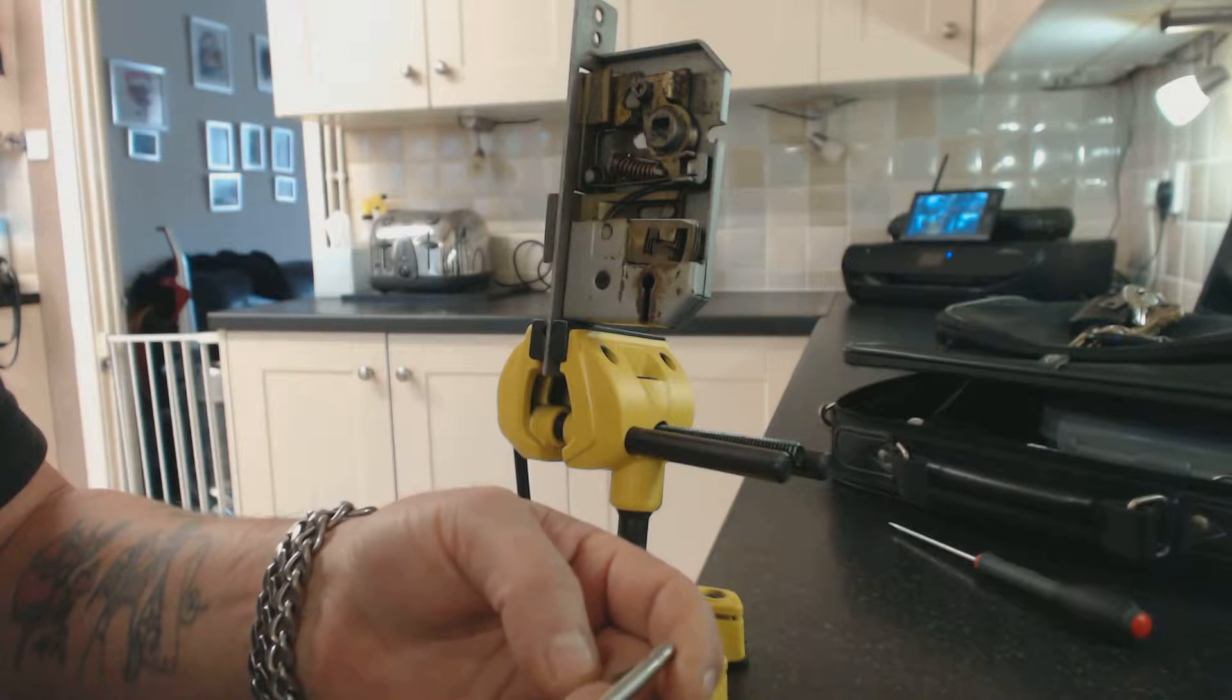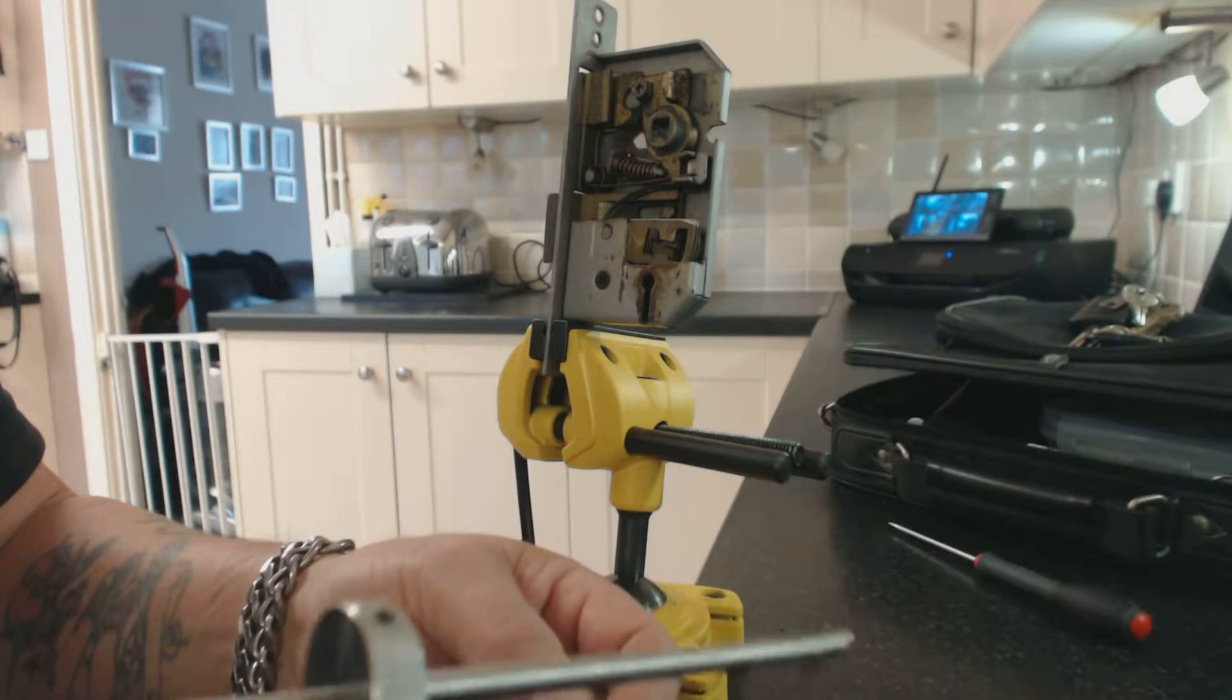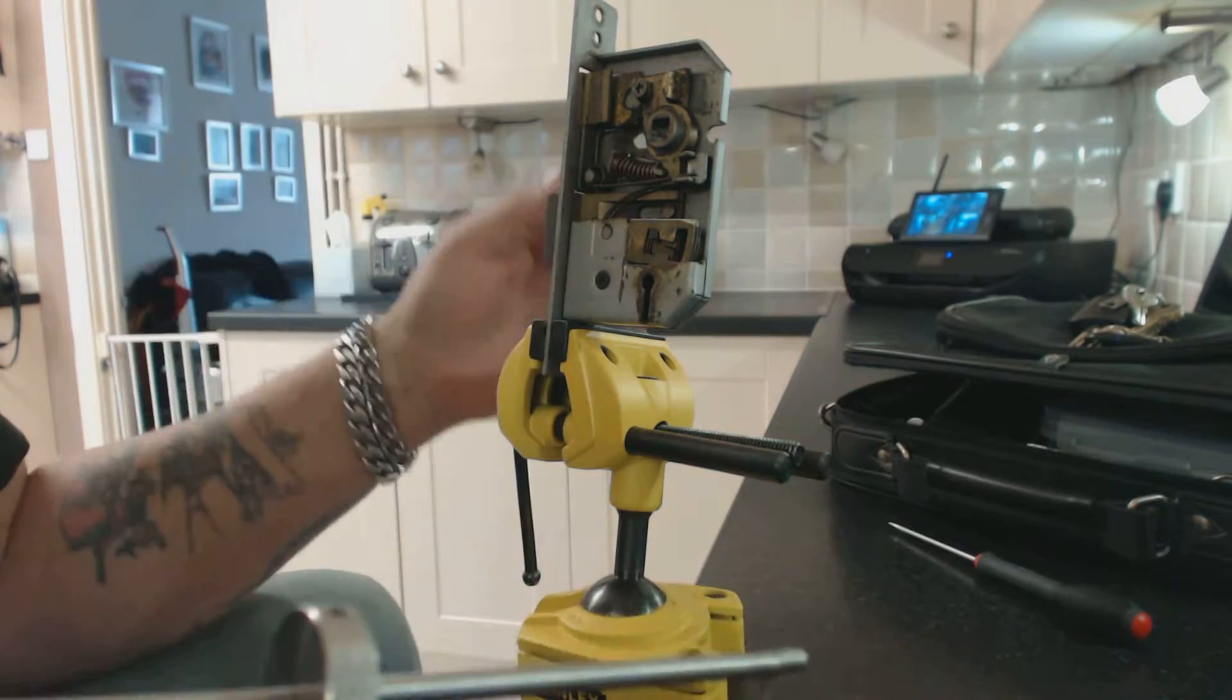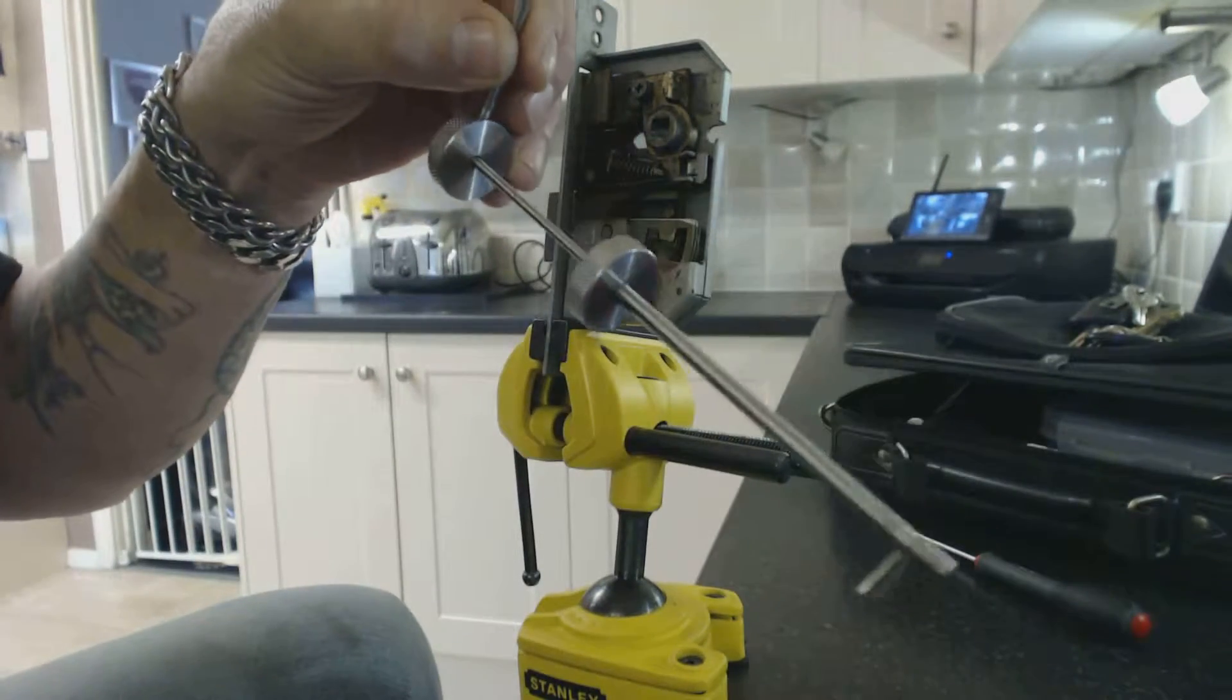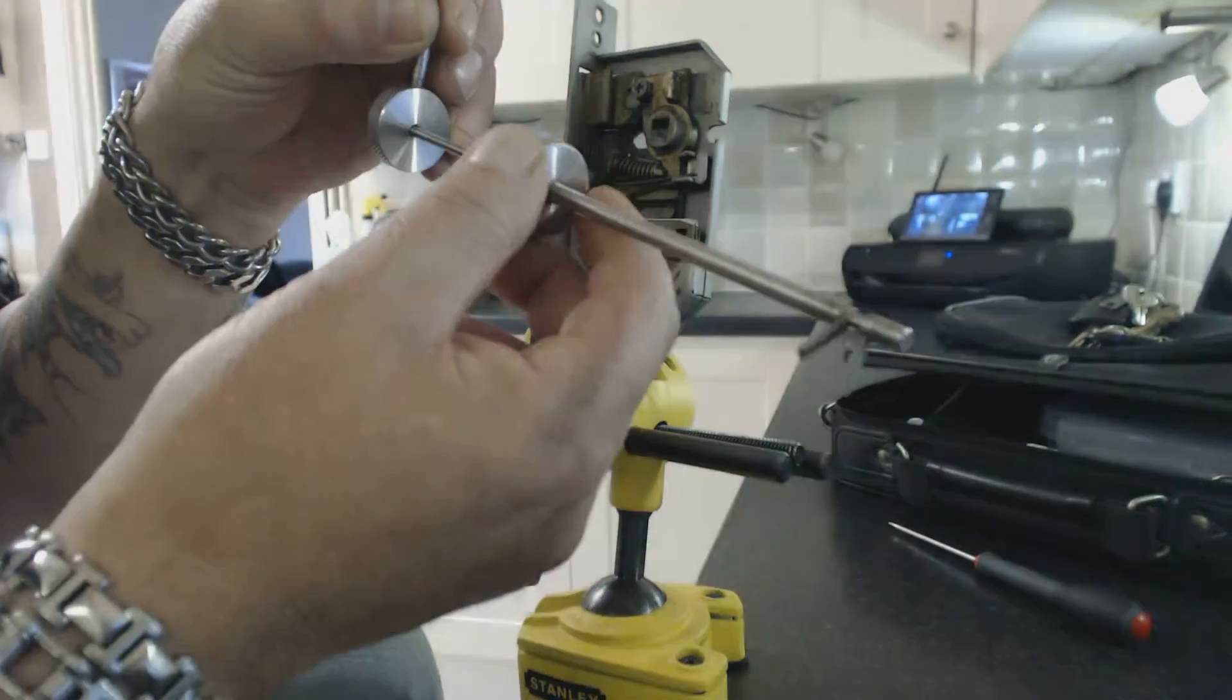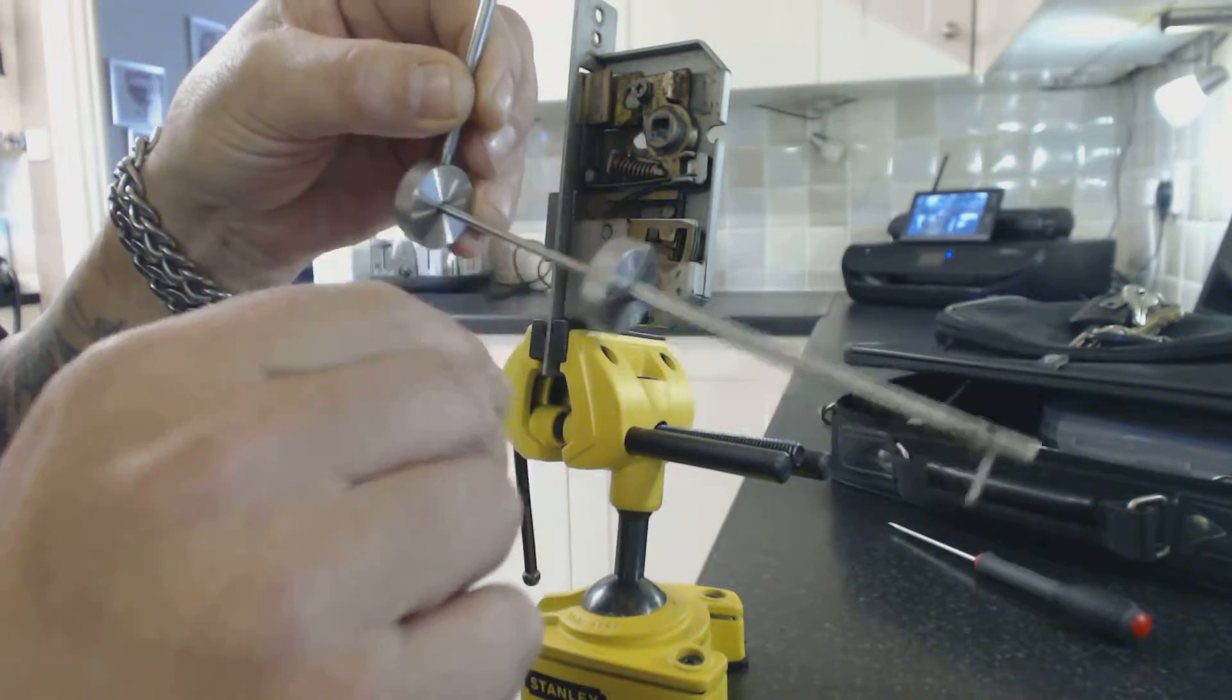Hi, welcome to Rowthorns Locksmiths and Locksmith Training. Today we're going to be looking at picking a mortise lock with a universal six gauge mortise pick.